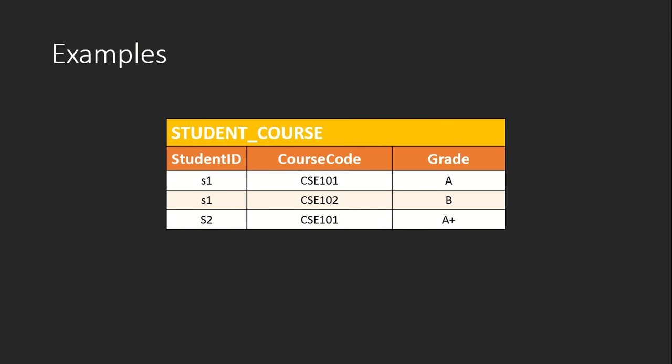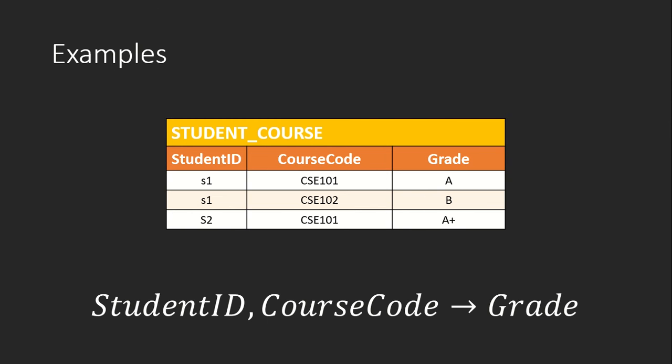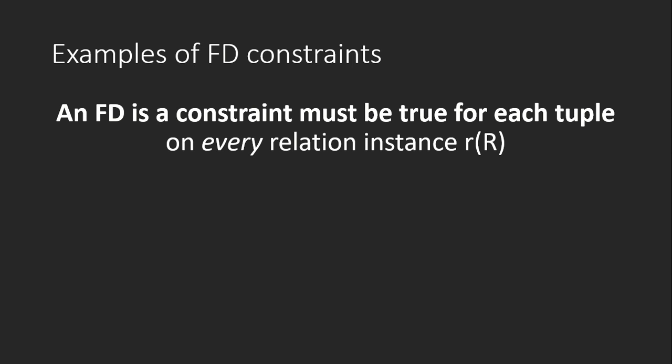Another example: in the student-course table we have student ID, course code, and grade as attributes. We may have a functional dependency where student ID and course code together can identify grade. A functional dependency is a constraint — it must be true for each tuple in every relation instance.